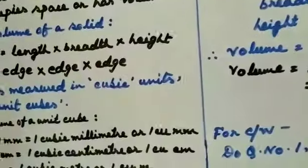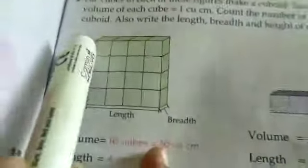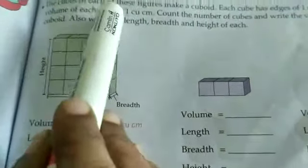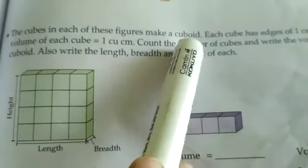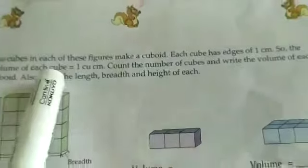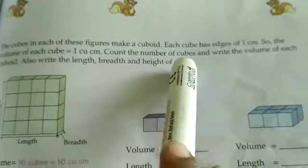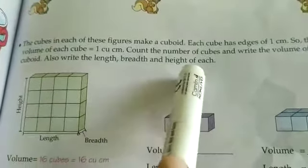Now look at your book, page number 155. Here you can see a cuboid. The cubes in each of these figures make a cuboid. These cubes have been joined together to make a cuboid. Each cube has edges of 1 cm, so the volume of each cube is 1 cu cm. Count the number of cubes and write the volume of each cuboid. Also write the length, breadth, and height of each.